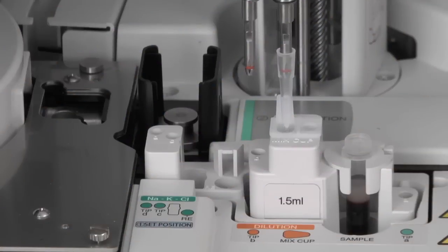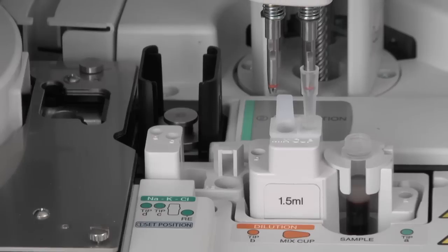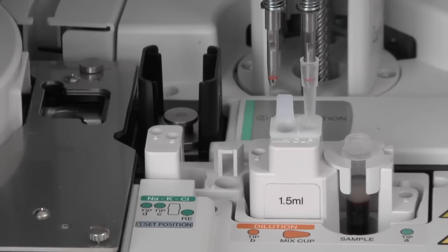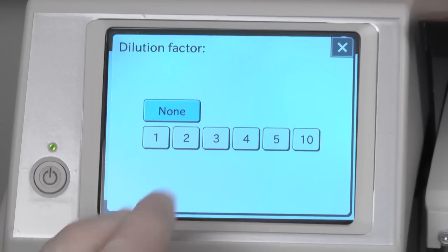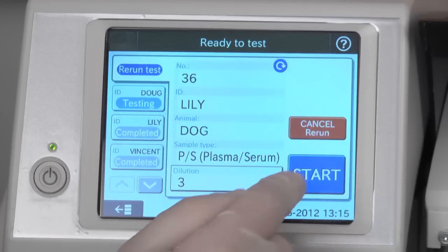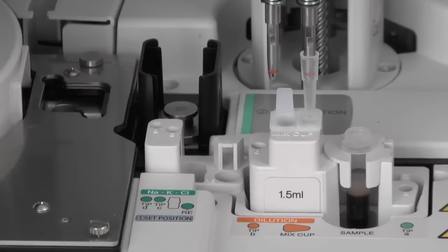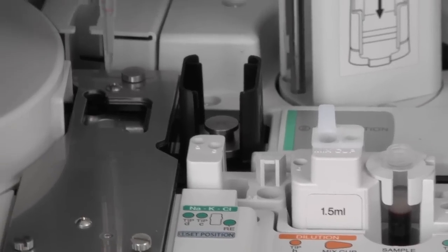For results that are outside of measurable limits, the Element DC offers automated sample dilution, which eliminates guesswork and time-consuming manual steps. Simply set your sample, choose your dilution factor, and the analyzer will automatically perform the dilution and calculate your results accurately and quickly.